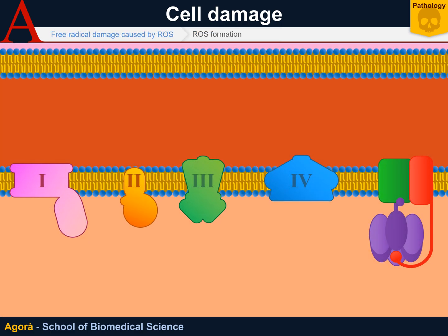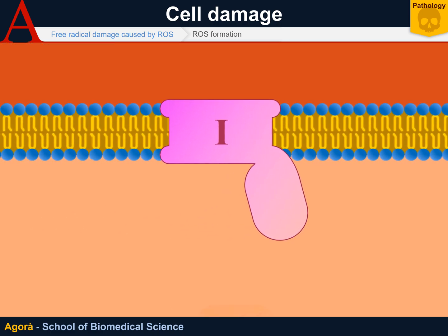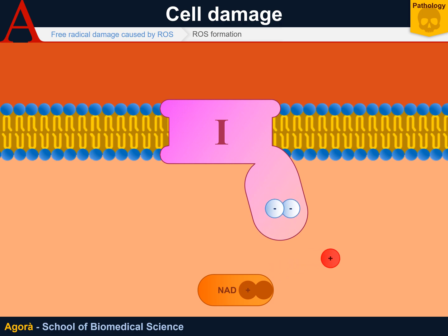Radicals form in different points of the cell, mainly from the mitochondrial respiratory chain that leads to large quantities of ATP production from NADH and FADH2. The hydrogen contained in NADH and its electrons are separated at the beginning of the chain. The two electrons are passed to Complex 1, while the proton is released in the mitochondrial matrix.